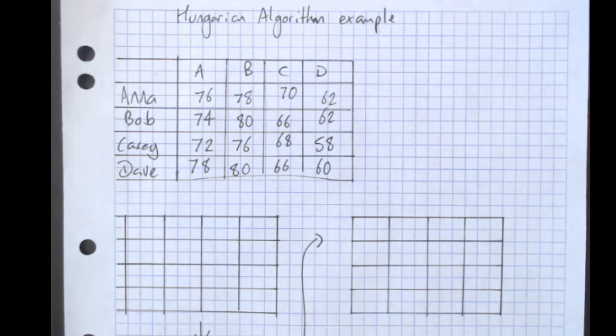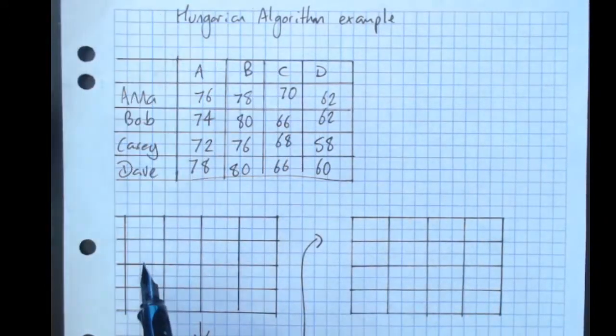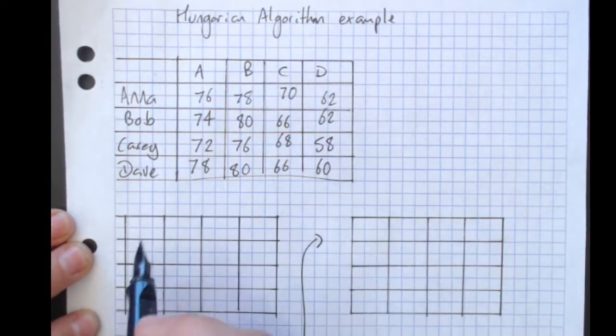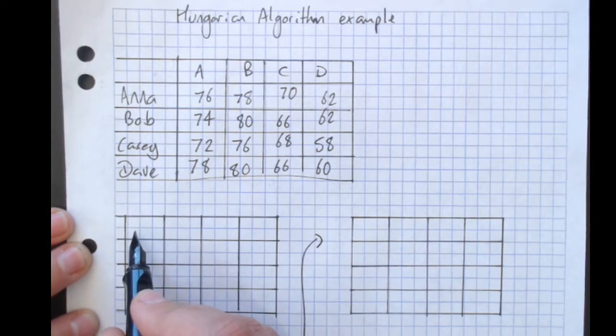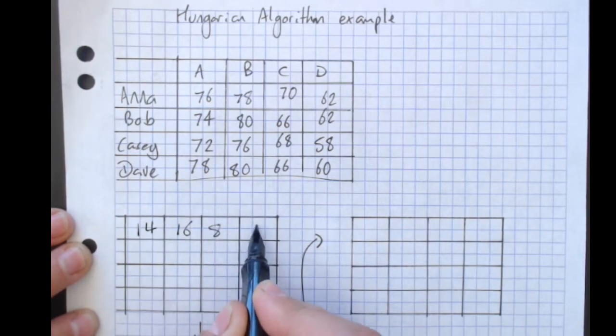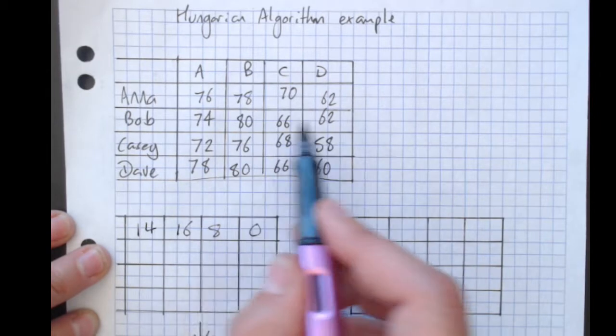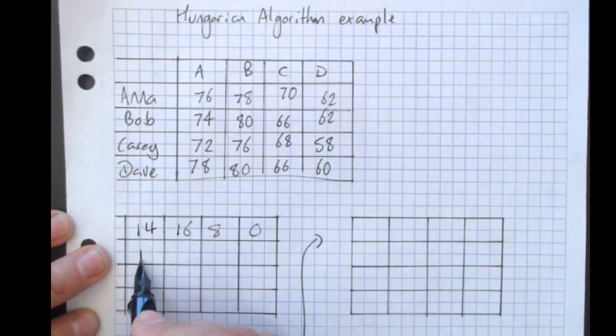So your steps for following the Hungarian algorithm: Subtract the lowest value from each row. So this row here, the lowest value is 62, and we're taking away 62 from each row and putting the numbers in here. Lowest one is again 62, taking them all away from there.